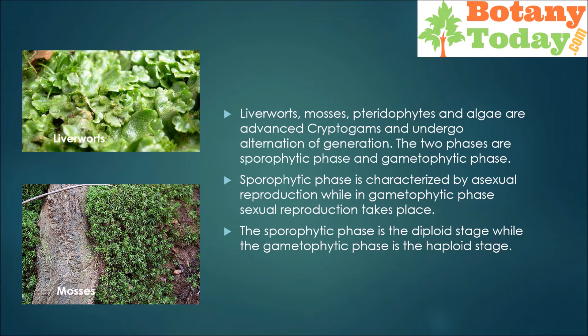Advanced cryptogames such as liverworts, mosses, pteridophytes, and algae undergo alternation of generation — that is, these go through two phases to complete their life cycle. The two phases are the sporophytic phase and the gametophytic phase. The sporophytic phase is characterized by asexual reproduction, while in the gametophytic phase sexual reproduction takes place.